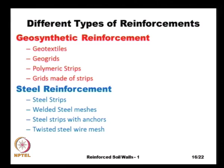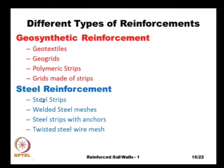A wide variety of materials are used, both polymeric and metallic. Geosynthetic reinforcements commonly used in the industry include geotextiles, geogrids, polymeric strips, and grids made of polymeric strips. Steel is used in several forms: steel strips, welded wire meshes, steel strips with anchors, and twisted steel wire mesh — all of which can act as reinforcing elements.